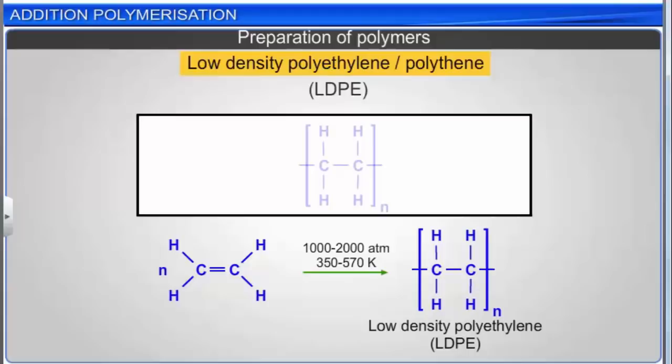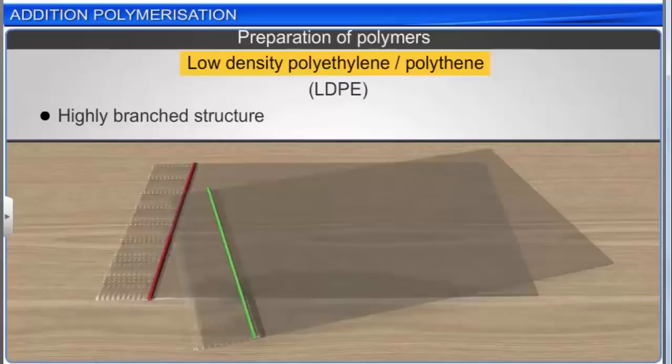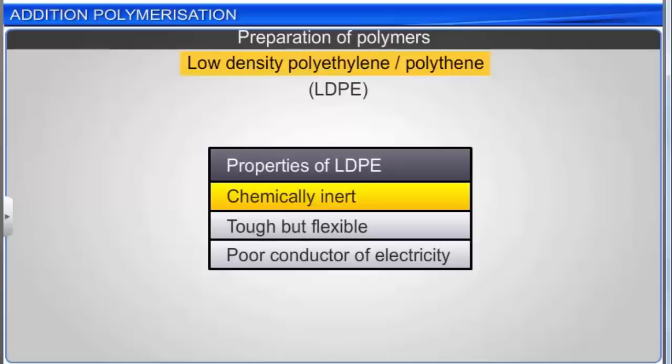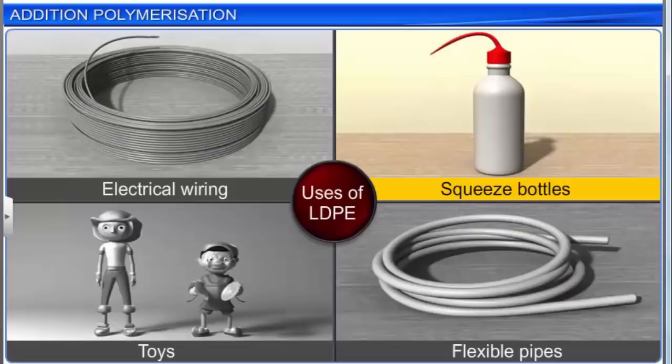Typically, either oxygen or a peroxide initiator such as benzoyl peroxide is used as a catalyst. LDPE is a highly branched structure where the branches in turn may also have side chains. The branches keep the chains from packing closely together, so the resulting plastic is soft. LDPE is chemically inert, tough but flexible, and a poor conductor of electricity. LDPE is used to make insulation for electrical wiring, squeeze bottles, toys, and flexible pipes.